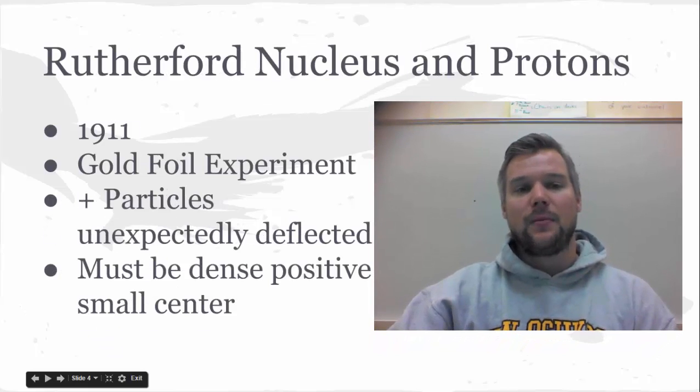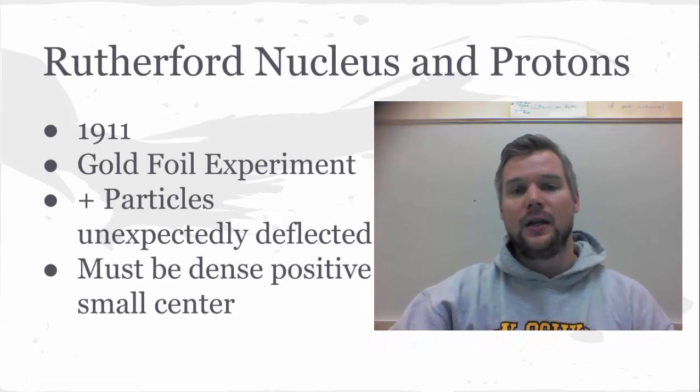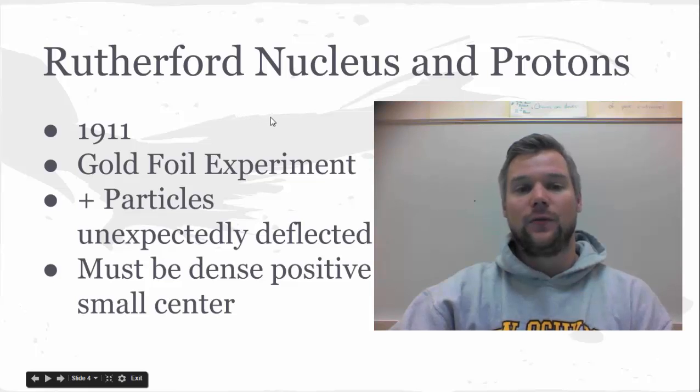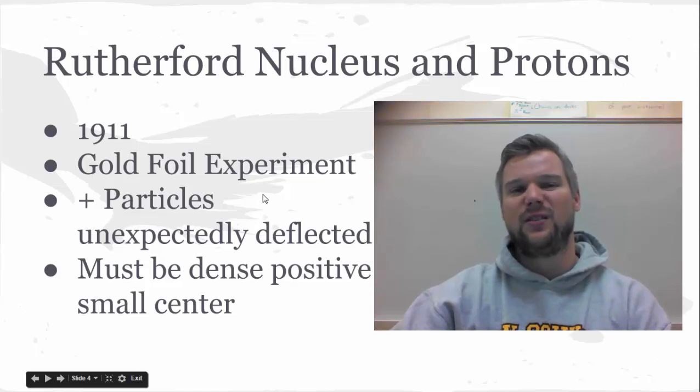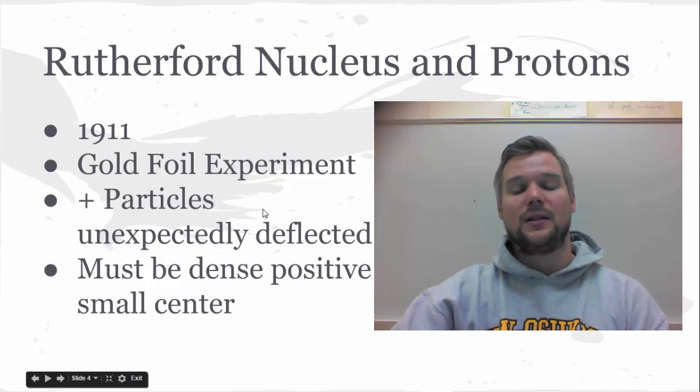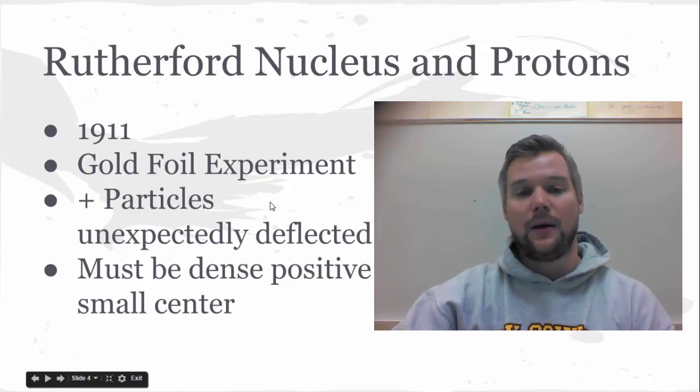Then Rutherford came along after Millikan doing something called the gold foil experiment. This is a couple years after Millikan, and what he found was that there's these positive particles that he was able to fire at a piece of gold foil, and he didn't expect them to get deflected, but they did. He thought that they would just go right through the gold foil. It was very, very thin foil based on the previous ideas from Thomson that there's this plum pudding model.